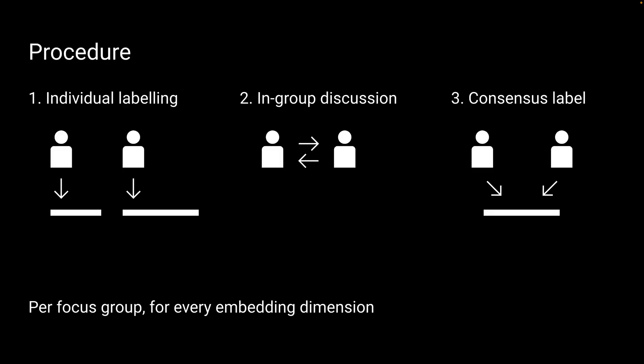This is the procedure. In every group, participants would first individually label the dimension. Then, have an in-group discussion. And finally, within the group, reach a consensus label. And this is done per focus group and for every embedding dimension individually.